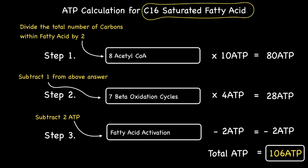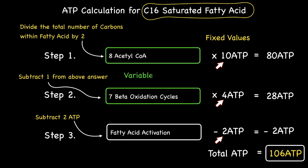One more thing before I wrap things up with this section. Within this three-step process, the number of ATPs associated with each acetyl-CoA always remains at 10, each beta-oxidation cycle always remains at four ATPs, and fatty acid activation always remains at minus two, irrespective of the length of the saturated fatty acid chain. These values should be considered as fixed values, while the total number of acetyl-CoA and the total number of beta-oxidation cycles are variable values dependent on the number of carbons within the fatty acid chain.